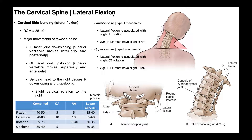Lateral flexion is named based on which side you're bending toward. In this picture, we're looking at a posterior view of a person's neck, and this person is bending to the right — putting their right ear in the direction of their right shoulder. So this would be right side bending or right lateral flexion.